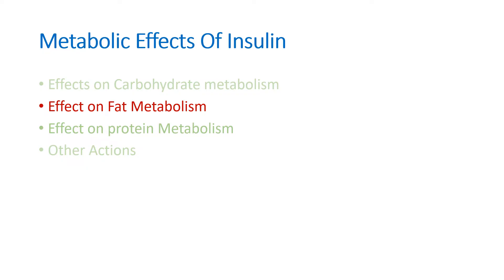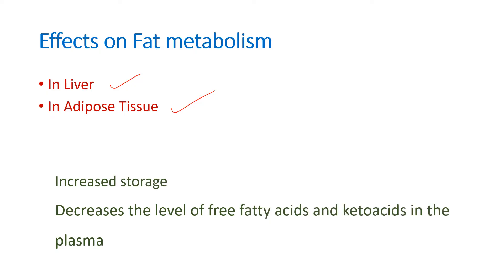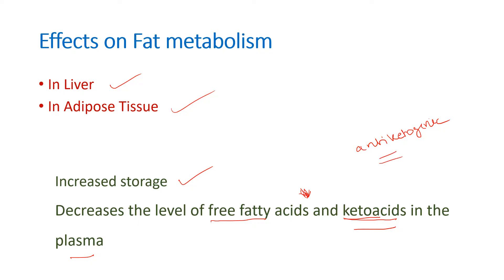The effect of insulin on fat metabolism primarily involves the liver and the adipose tissue. The main aim of insulin is to increase the storage of fatty acids and decrease the level of free fatty acids and keto acids in the plasma. Because it decreases the keto acid level in plasma, it is also called an anti-ketogenic hormone. That is why in diabetes mellitus there is a complication called diabetic ketoacidosis, due to excess keto acids in the blood.